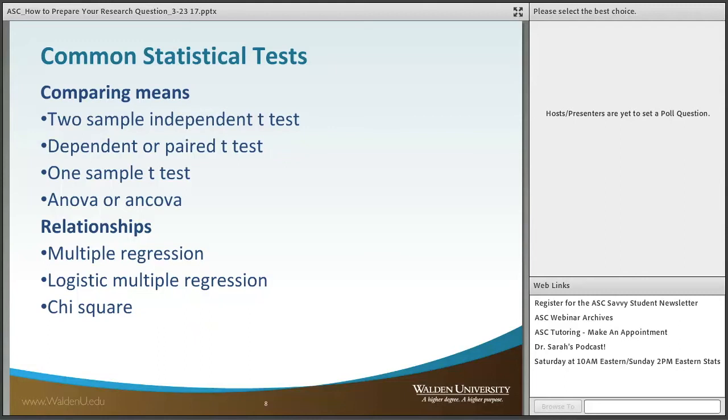In the second one, the dependent or paired t-test, the word dependent means that we will only have one group. So for instance, maybe 35 of us go to the gym and we're going to do Zumba three mornings a week.